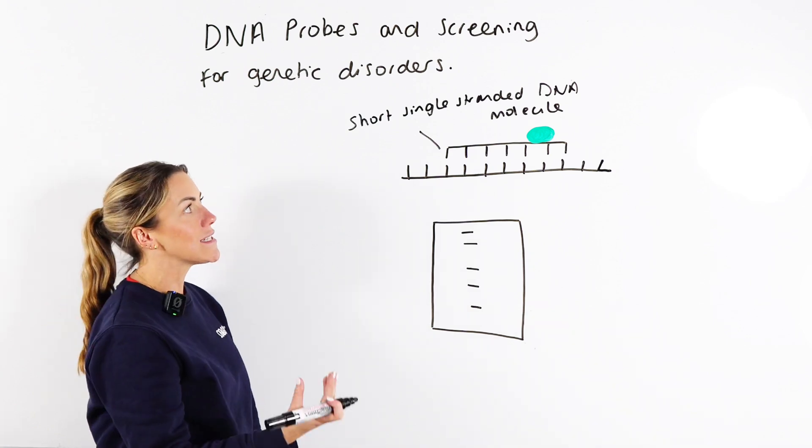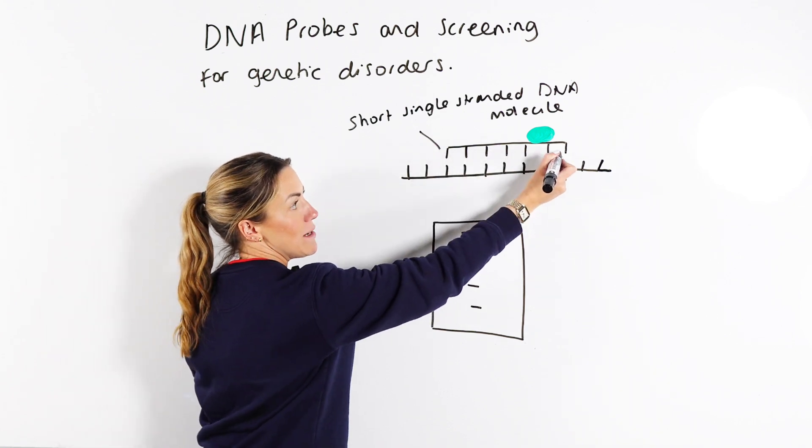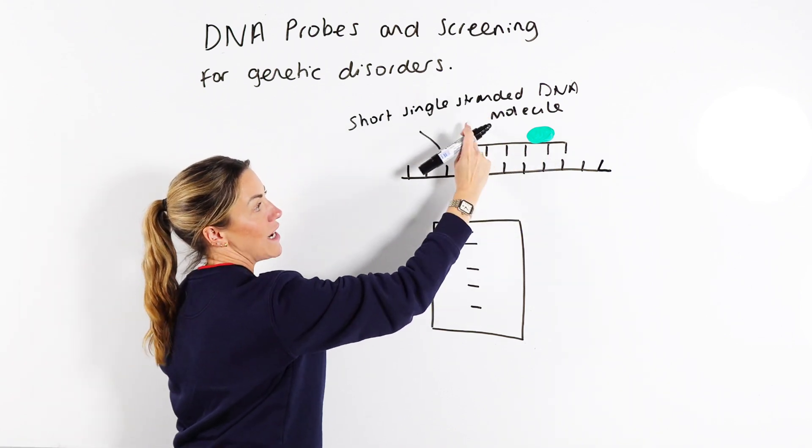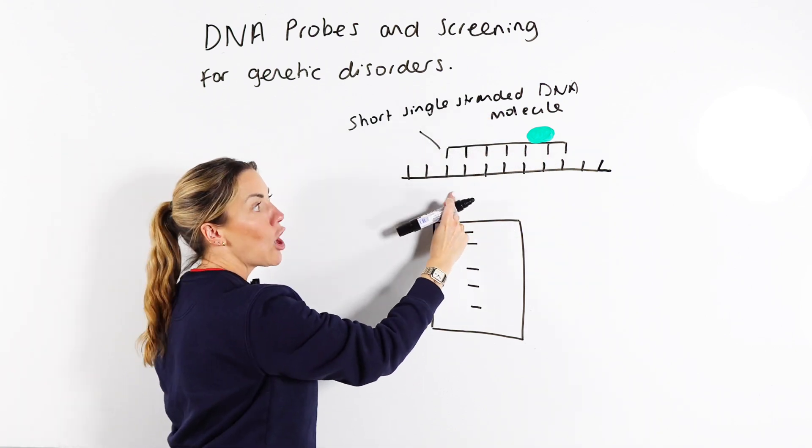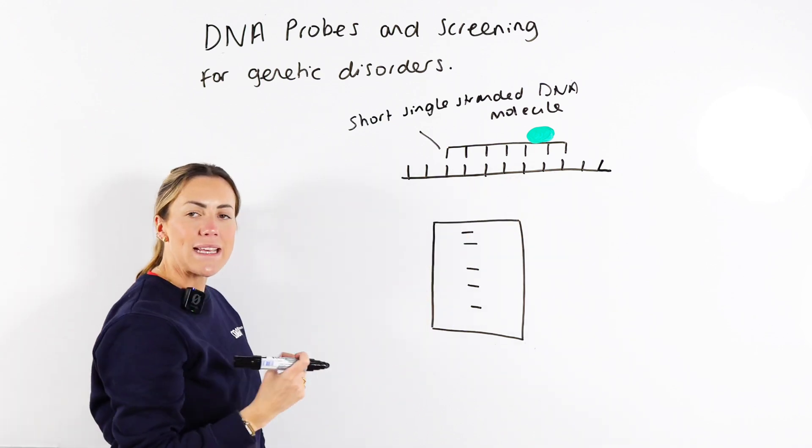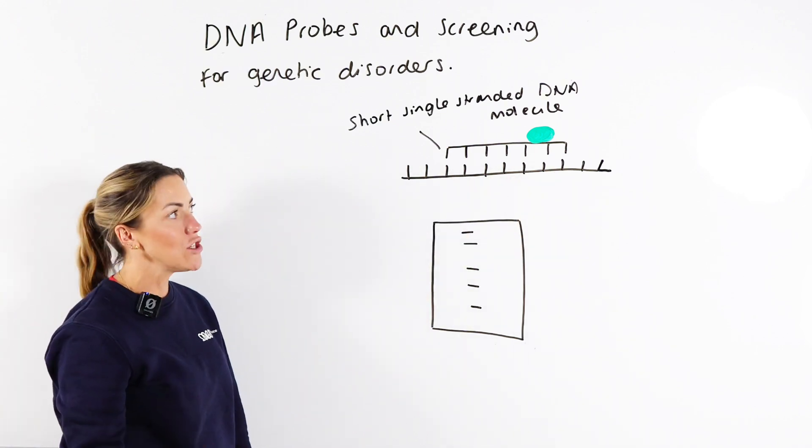We can then use a gene machine to manufacture a gene probe which is a short single-stranded DNA molecule that will be complementary to the base sequence in the allele of interest.